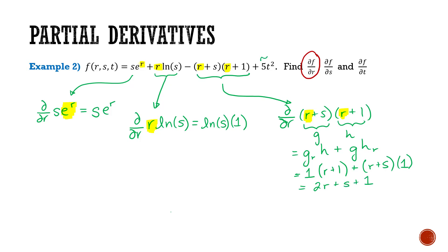Now I've got one more term, my 5t². The derivative of this with respect to r is going to be 0, because in this term there are no r's. So this entire term is a constant, and the derivative of any constant is 0.